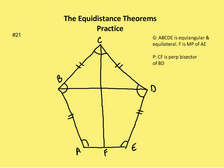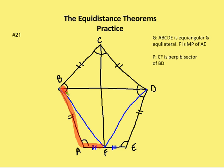The first thing I want to do is draw a couple of auxiliary lines — one from B to F, and one from D to F. I also identify that AF is congruent to FE because F is the midpoint of AE. Now I have two triangles: triangle BAF and triangle DEF.